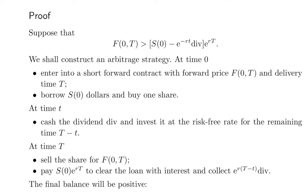Enter into a short forward contract with forward price F(0,T) and delivery time T. Borrow S0 dollars to buy one share at time 0. Cash the dividend div and invest it at the risk-free rate for the remaining time T minus t. At time T, sell the share for F(0,T). Pay back the loan with interest and collect e^(r(T−t)) · div.